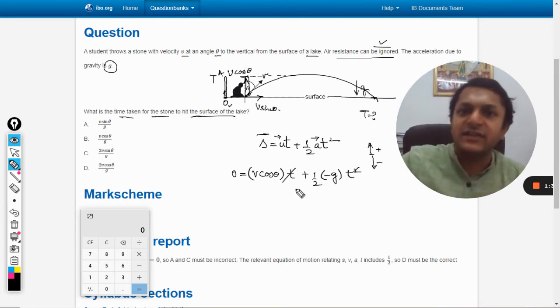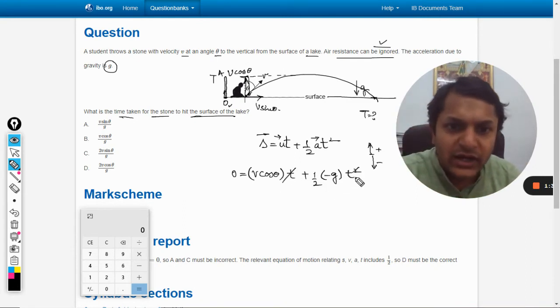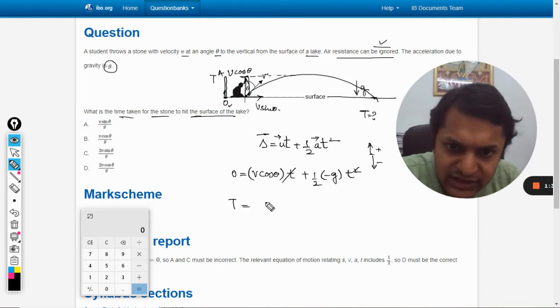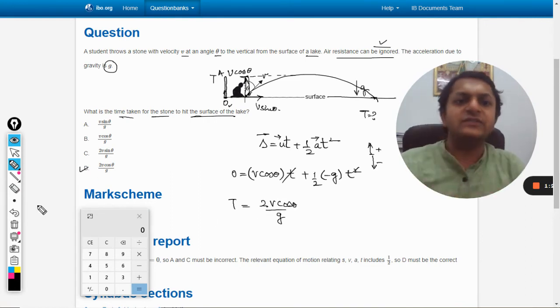This is equal to zero. So this t has been cancelled out; we are left with only one t from here. This total t will come out to be 2v cos theta divided by g. So answer is D.